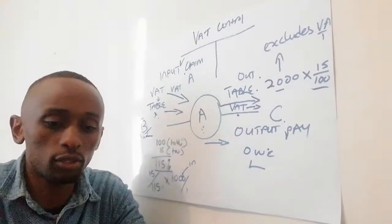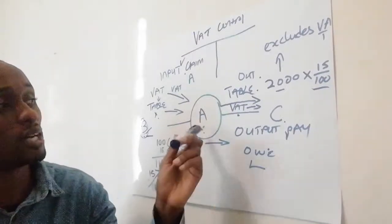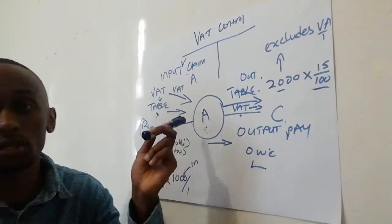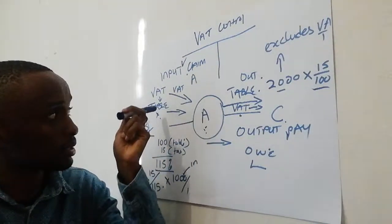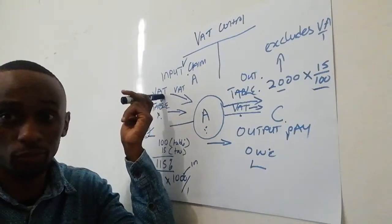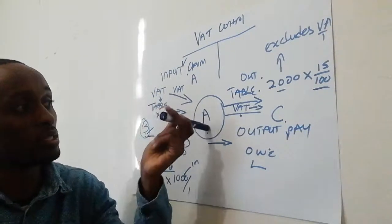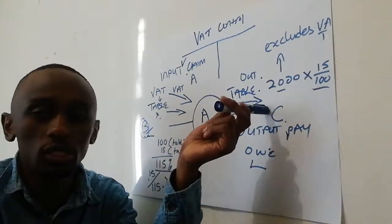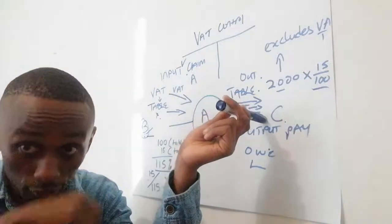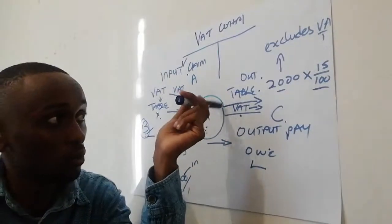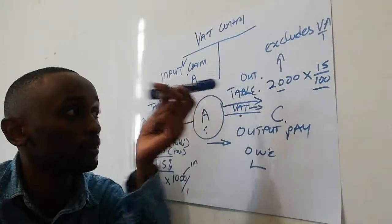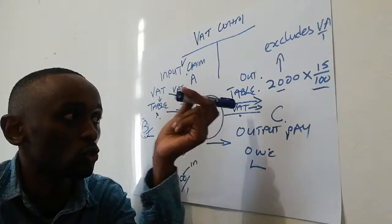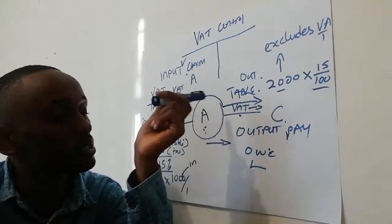When something is coming into the business, you don't receive just that thing - it comes as that thing plus the VAT portion. When the business decides to sell to the customer, who is the end bearer of VAT, it's now the table price plus the VAT. So don't get these two things twisted.